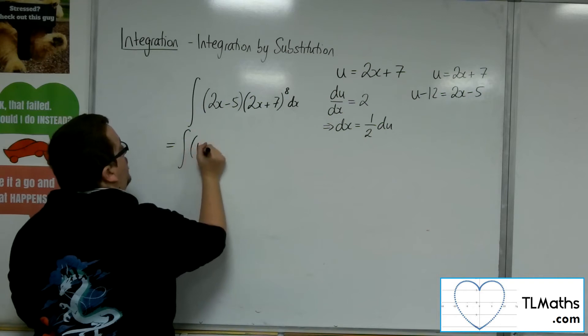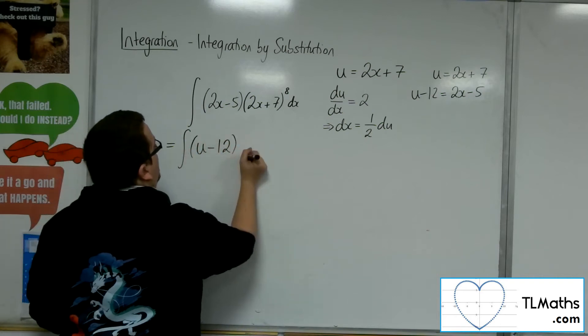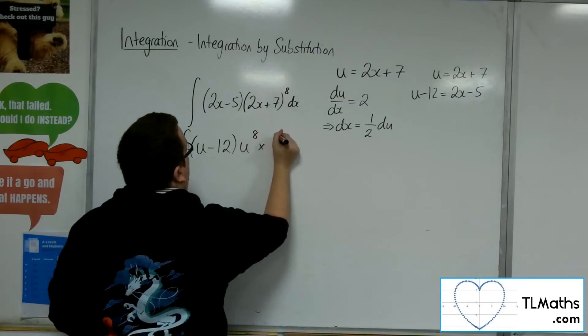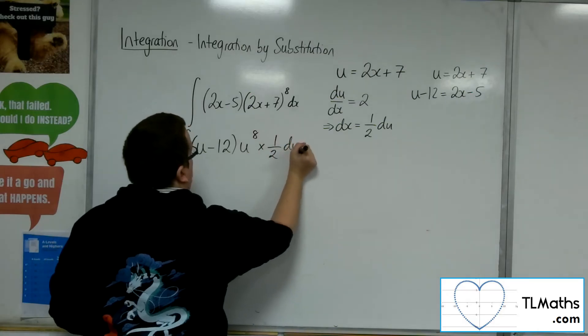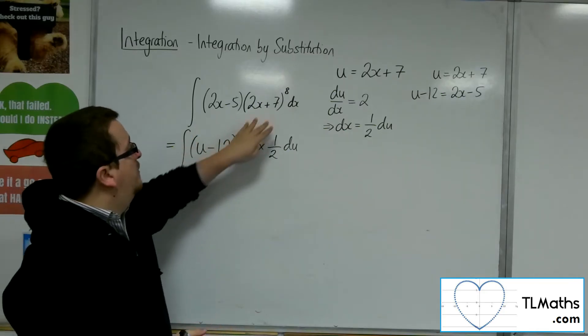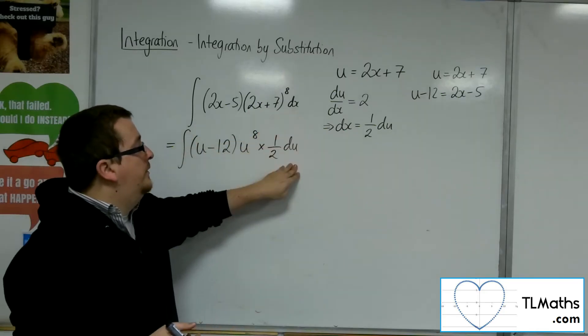So that would be (u minus 12) times u to the power of 8, times 1/2 du. I've replaced the 2x minus 5, the (2x plus 7) to the 8, and the dx.